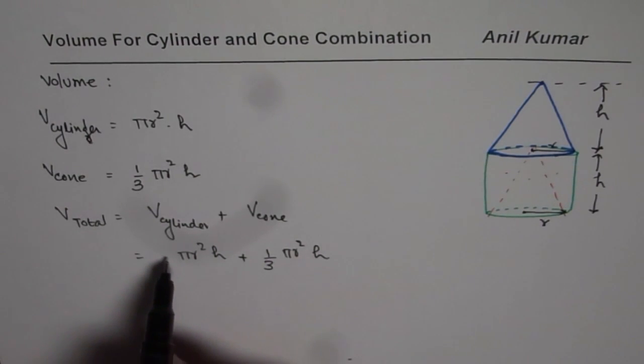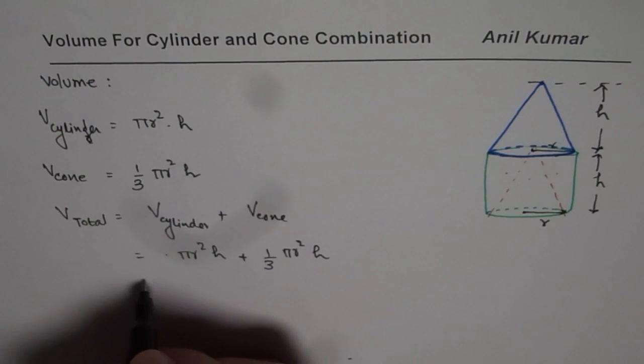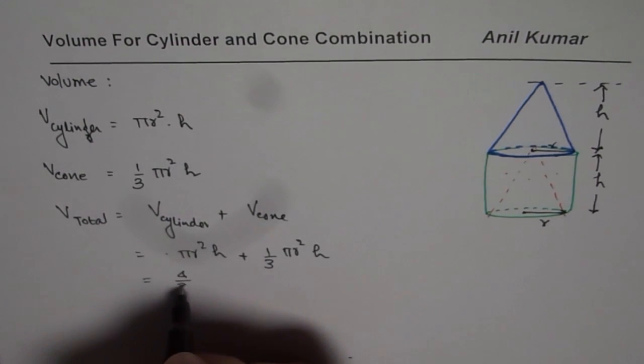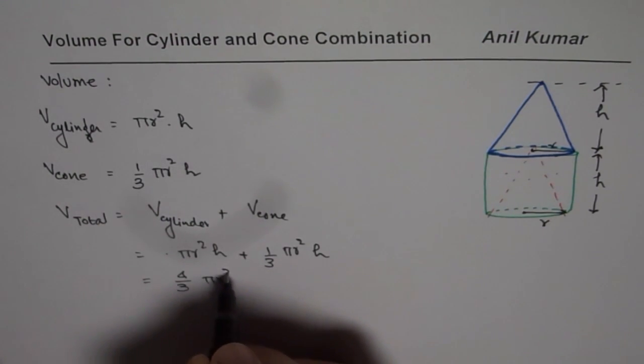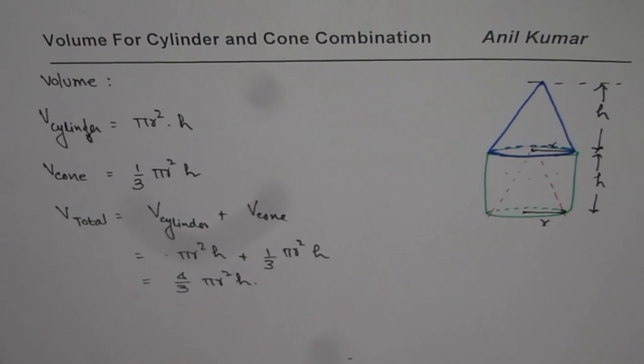When you take 3 as common denominator, this becomes 3 plus 1, which is 4. So it is 4 over 3 pi r square h. That is how you could easily find volume of such combination of three dimensional figures.